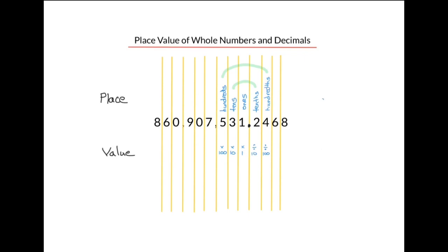Let's consider any number — for example, the number eight. If we multiply it by one, we end up with eight. And if we divide that number by one, we also end up with eight. So regardless of whether we multiply by one or divide by one, we end up with the same number. Therefore, the ones column on both sides are really the same thing — the ones and the 'oneths' occupy the same place and have the same value.